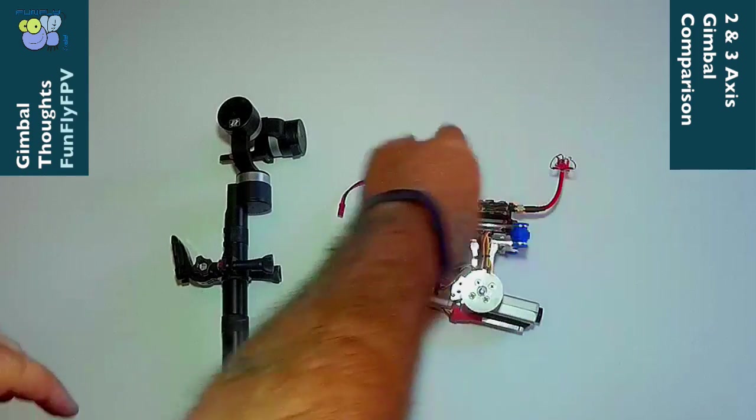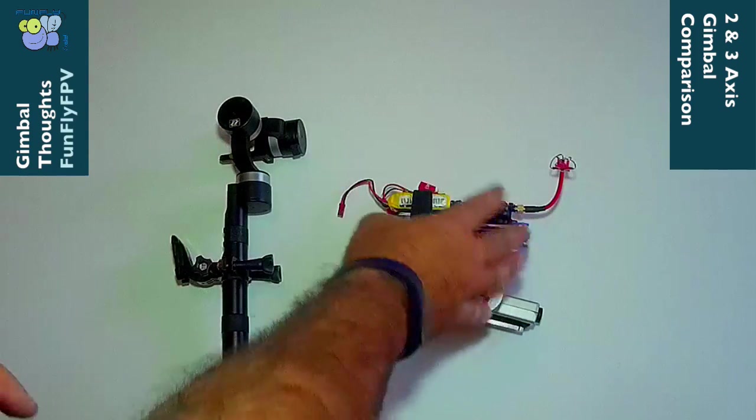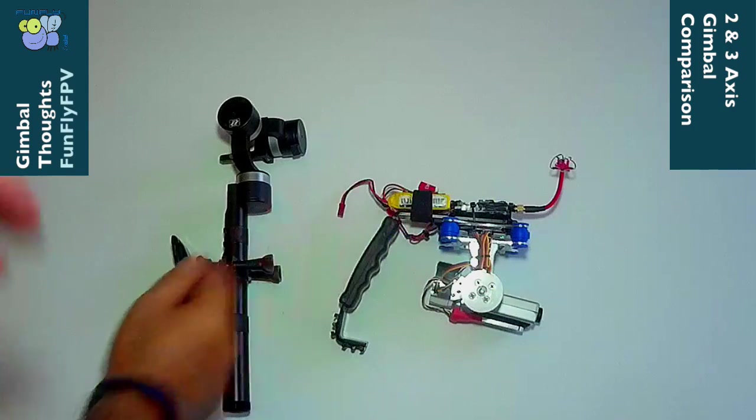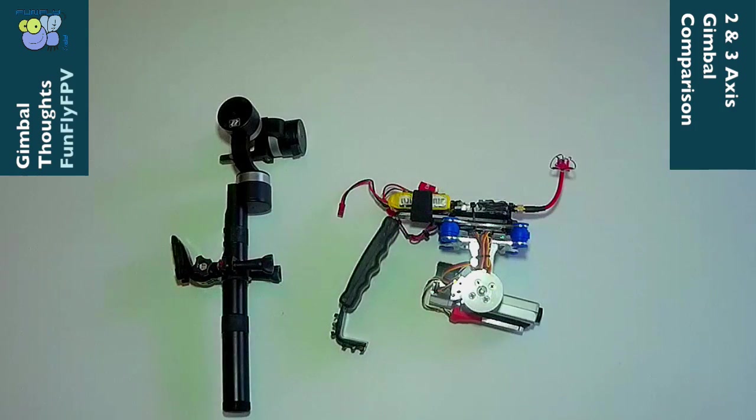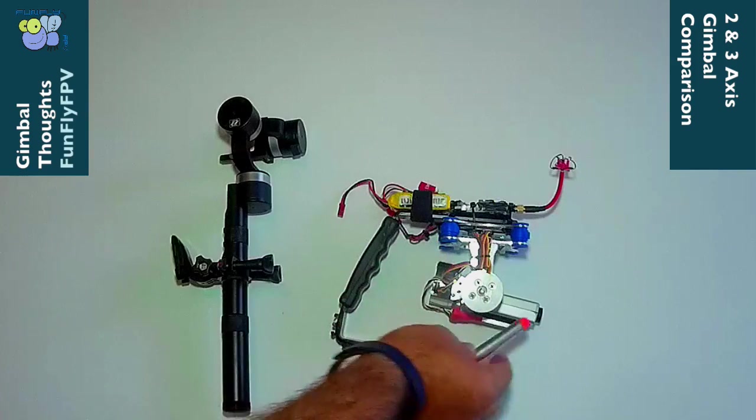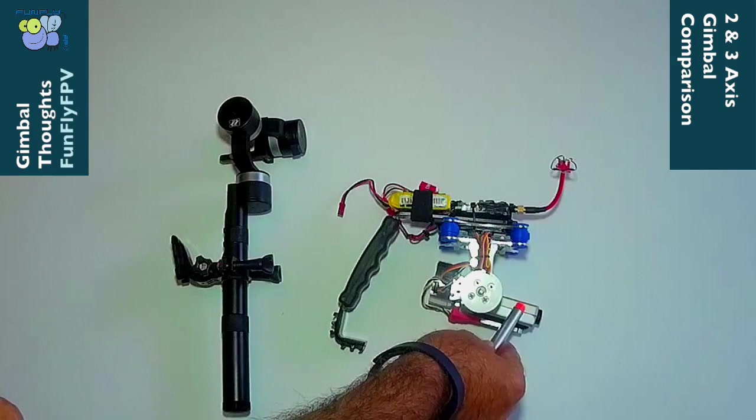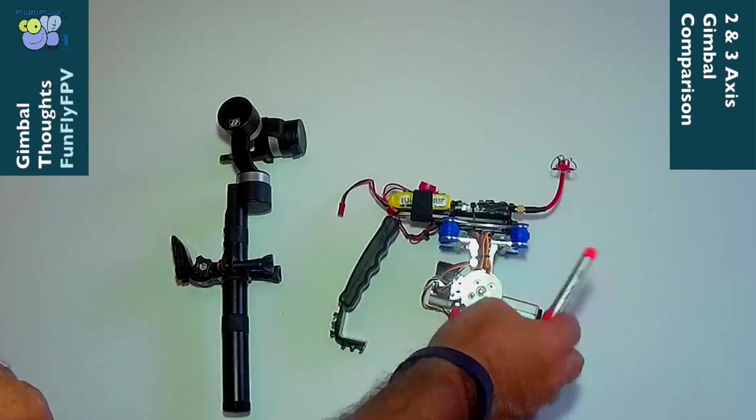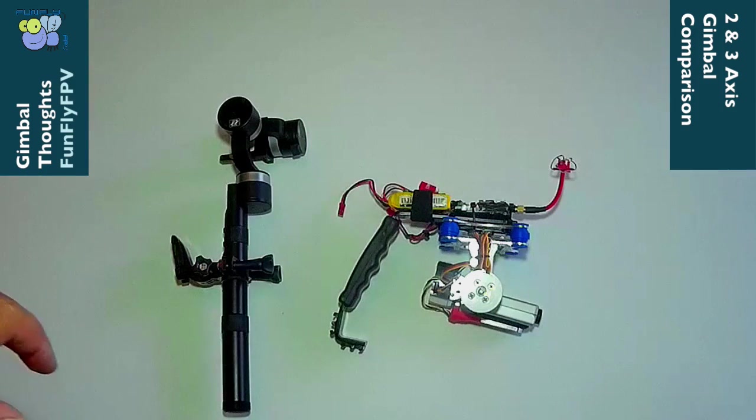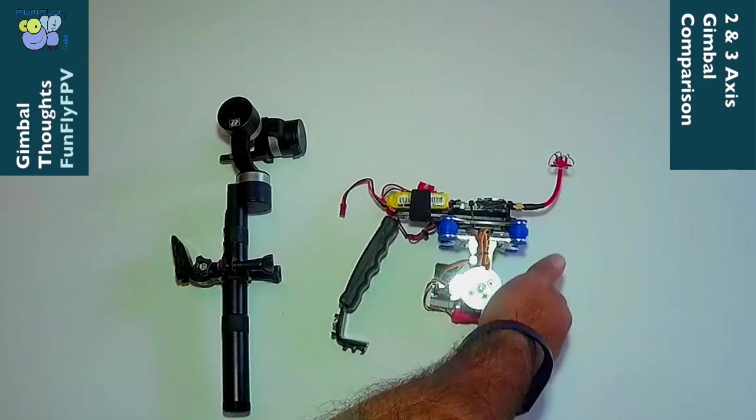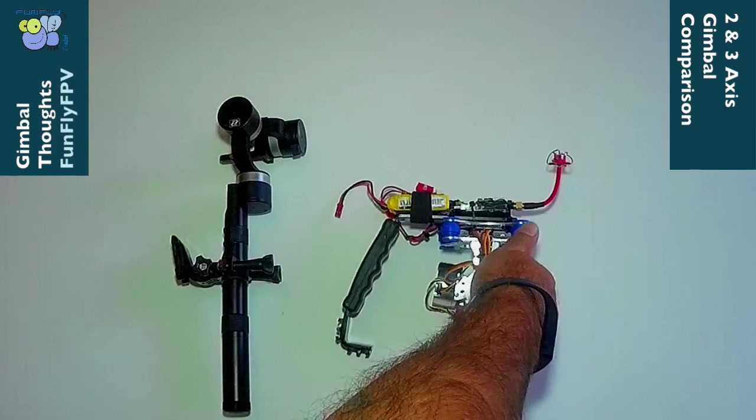You don't have to do the FPV transmission, but you can build a gimbal like this for $80, $60, $70 maybe. Then you just put a Mobius on there. You can turn it the other way and put a proper GoPro or something on there. I just use this as cheap as possible, so there's a Mobius on there.